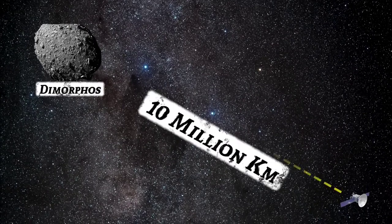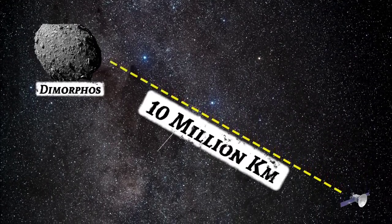After completing all the necessary calculations, DART left Earth's orbit and headed towards Dimorphos, which was located around 10 million kilometers away.